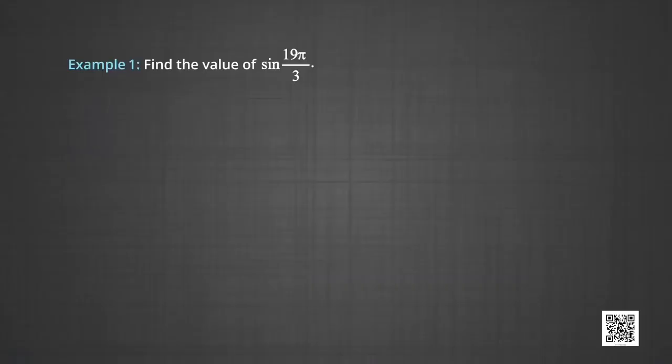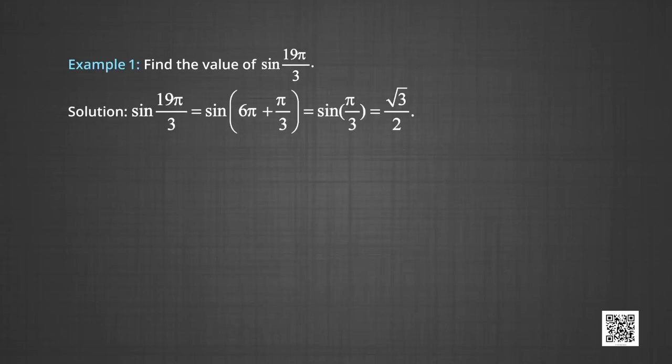In example 1, we have to find the value of sin(19π/3). Now, sin(19π/3) can be written as sin(6π + π/3). Since 6π completes 3 revolutions, sin(6π + π/3) = sin(π/3), which is equal to √3/2. So, the value of sin(19π/3) is √3/2.